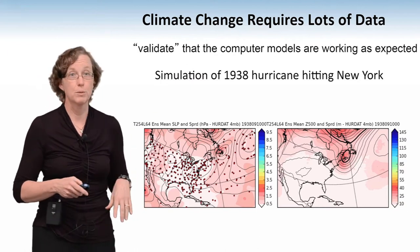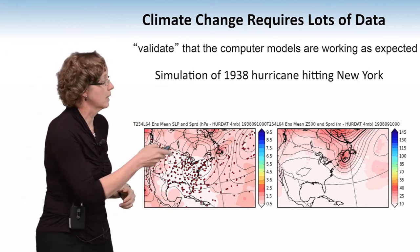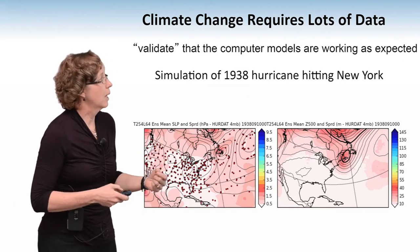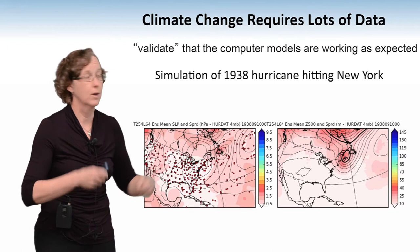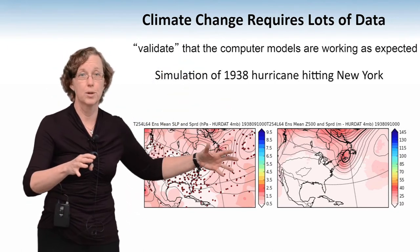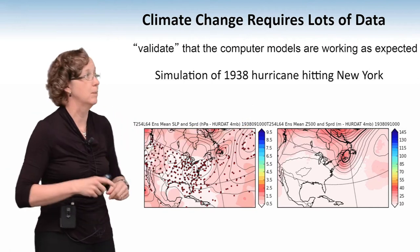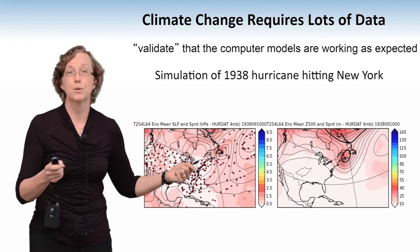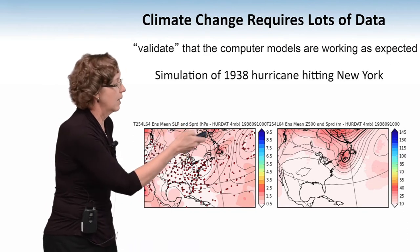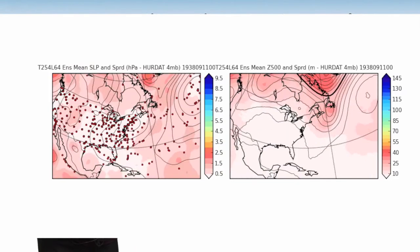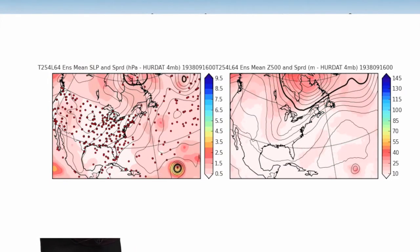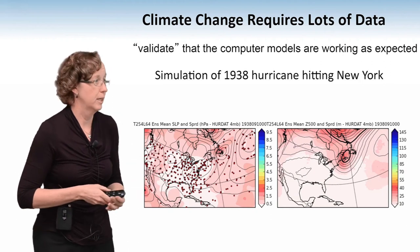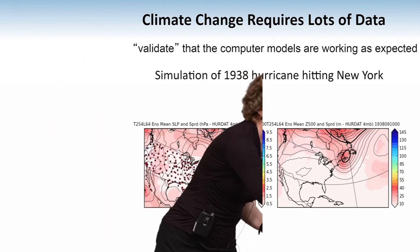The 1938 hurricane is one example, though they go back even further in their database. They collect data points from ships in the ocean, naval measurements, and newspaper reports from small cities that recorded climate data. Sophisticated algorithms are then run to smooth the data and fill in missing pieces, producing three-dimensional data every six hours for 100 years. On the left-hand side is the actual data from the 1938 hurricane hitting New York; on the right is the simulation — and although they don't look exactly the same, the hurricane looks very similar.